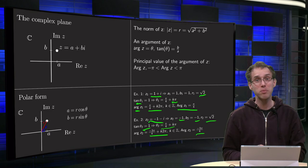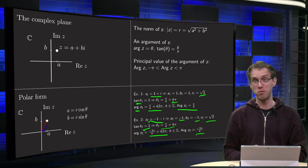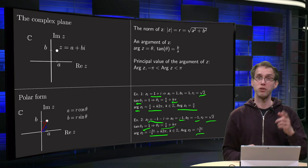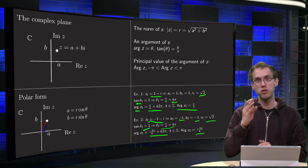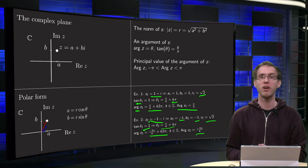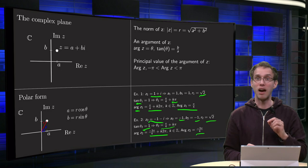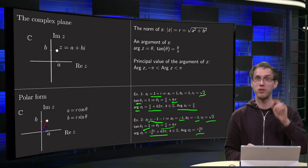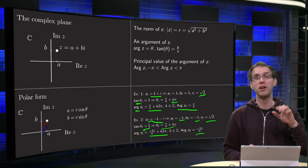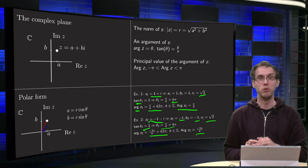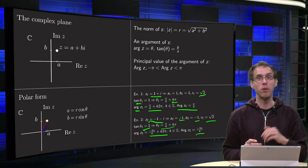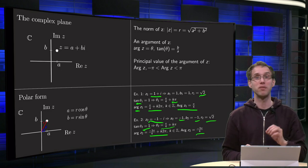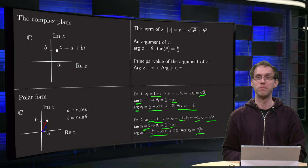So with the argument of a complex number, you really have to be aware and careful. First, you can add factors of 2pi, which is handled by distinguishing the small a and capital A argument. Second, your calculator only gives one answer, but if you draw your complex number in the plane, you will always be able to find the correct answer of the two.